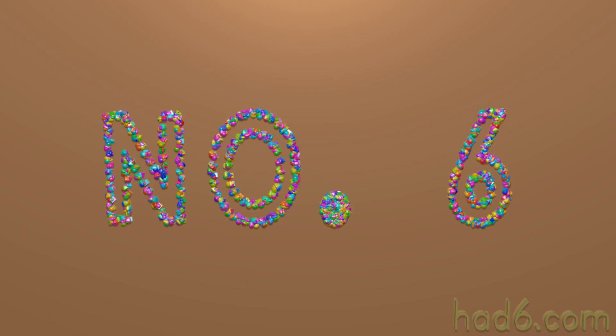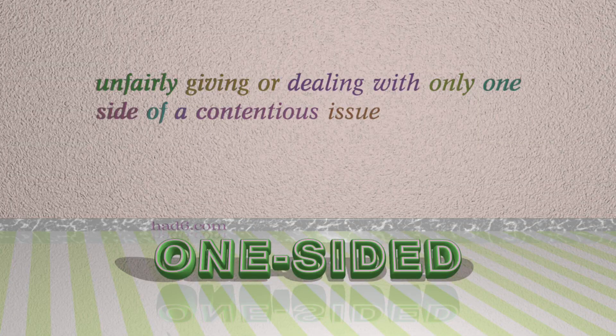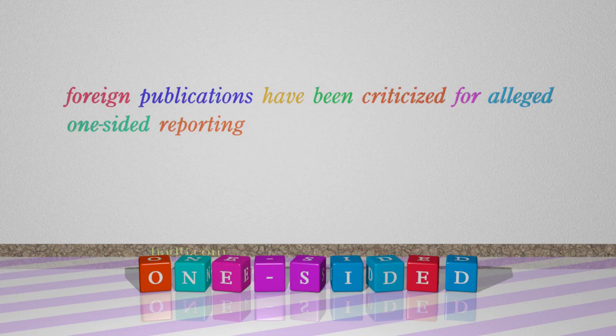Number 6: One-sided — which means unfairly giving or dealing with only one side of a contentious issue. For example: Foreign publications have been criticised for alleged one-sided reporting.